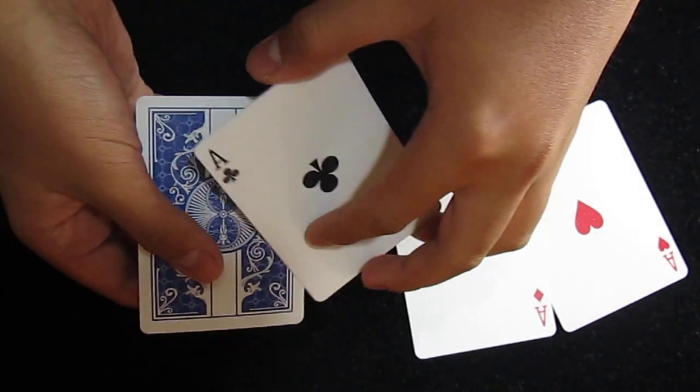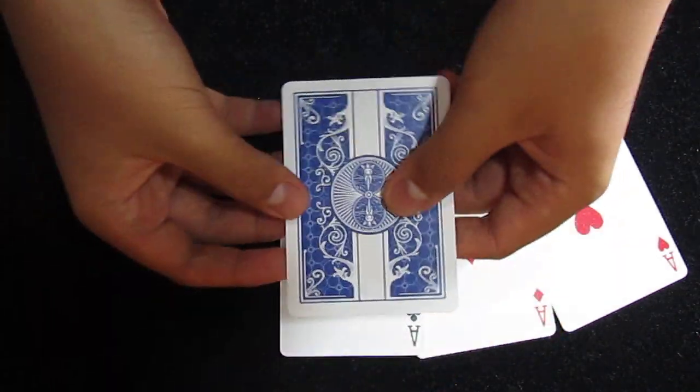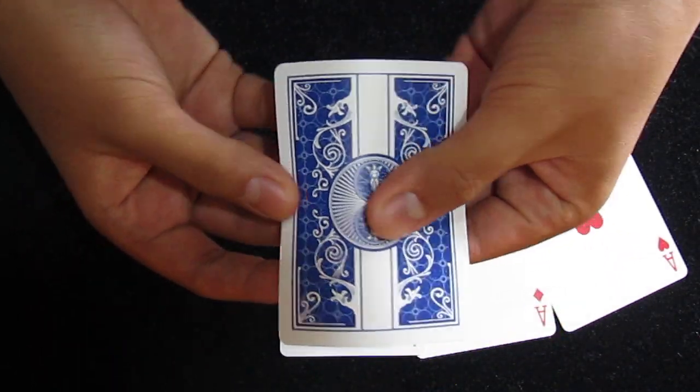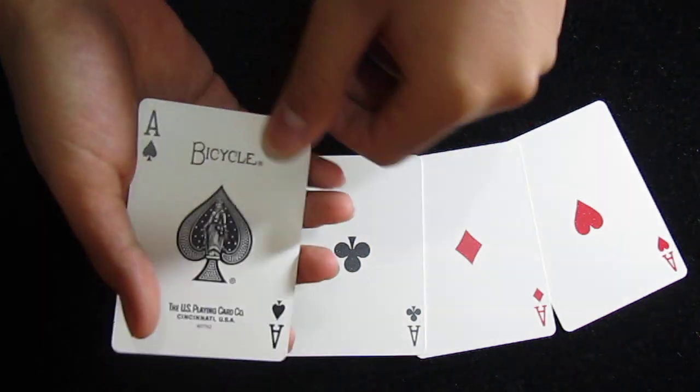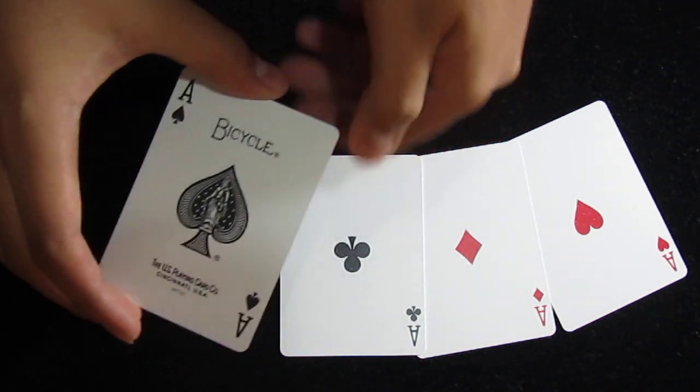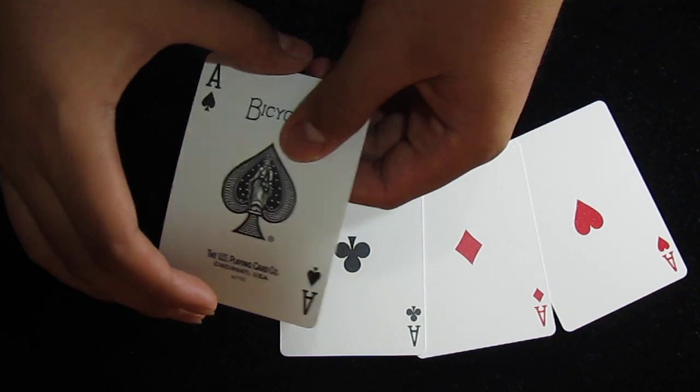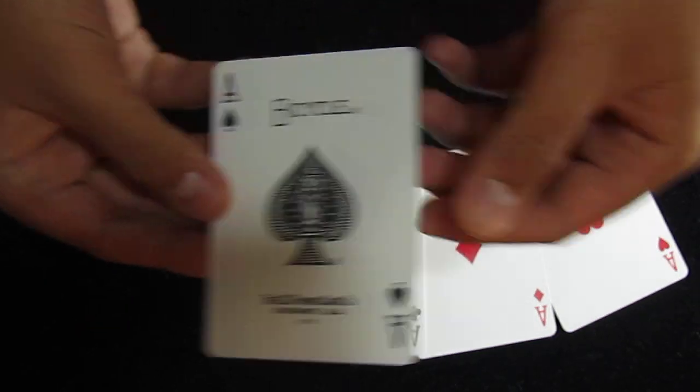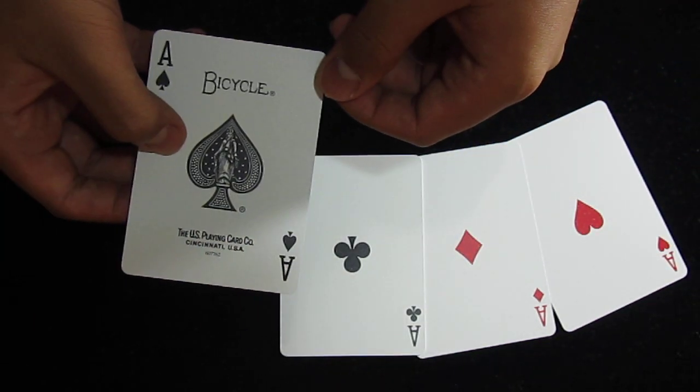So, I need this to change into the Ace of Spades. With a flick and a spin, it magically changes into the Ace of Spades. Now all I gotta do is send this with my Guaranteed Joker.